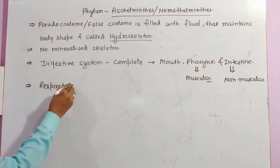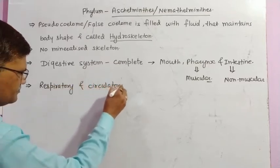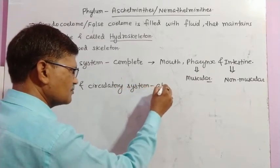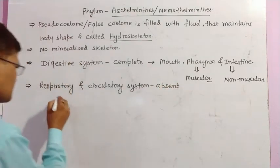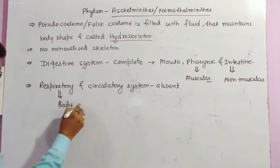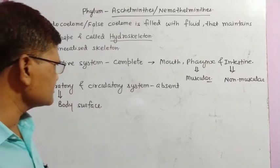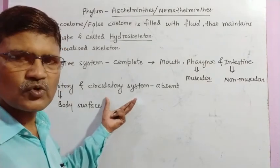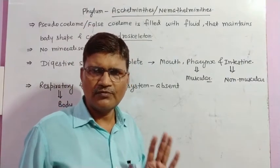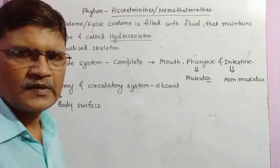Respiratory and circulatory systems are absent in Nemathelminths. Respiration occurs through the body surface, and circulation takes place through the fluid present in the pseudocoelom.